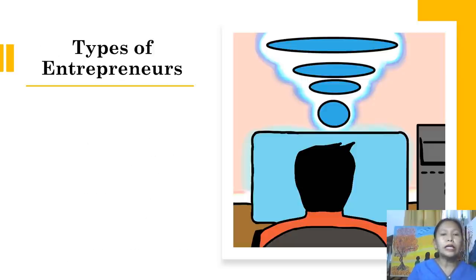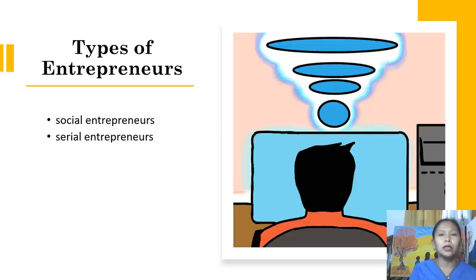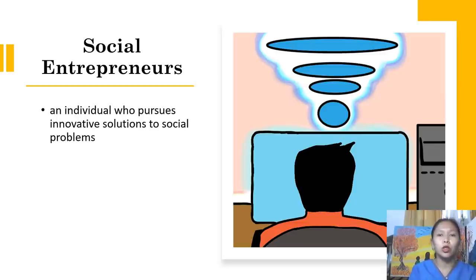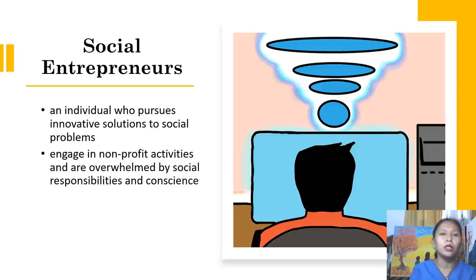So what are the types of entrepreneurs? The major types of entrepreneurs include social entrepreneurs, serial entrepreneurs, and lifestyle entrepreneurs. Social entrepreneurs are individuals who pursue innovative solutions to social problems. They adapt a style through which they can create and sustain social values.